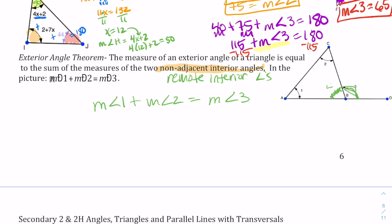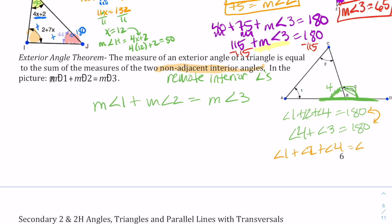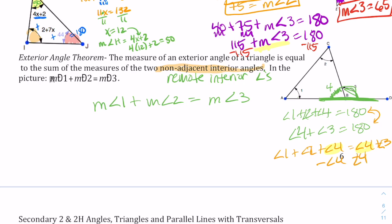To see where this comes from: angles one, two, and four in the triangle add up to 180 degrees. And angle four plus angle three also equals 180 degrees because they form a linear pair. Since both expressions equal 180, we can set them equal to each other: one plus two plus four equals four plus three. Subtracting angle four from both sides leaves us with the measurement of angle one plus angle two equals the measurement of angle three — which is what the theorem states.